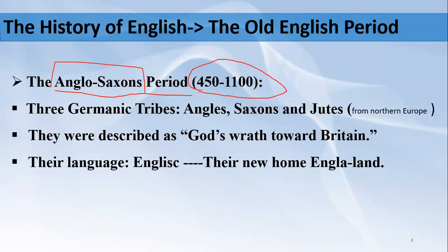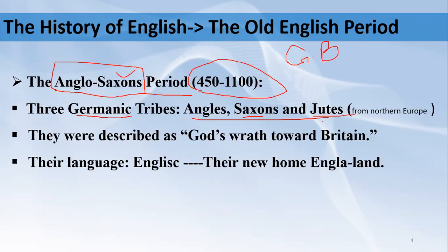Why is it called the Anglo-Saxon period? Due to three Germanic tribes — the Angles, Saxons, and Jutes. They were Germanic tribes because they came from northern Europe. They came to Great Britain, which is the older form of the modern UK, the United Kingdom.